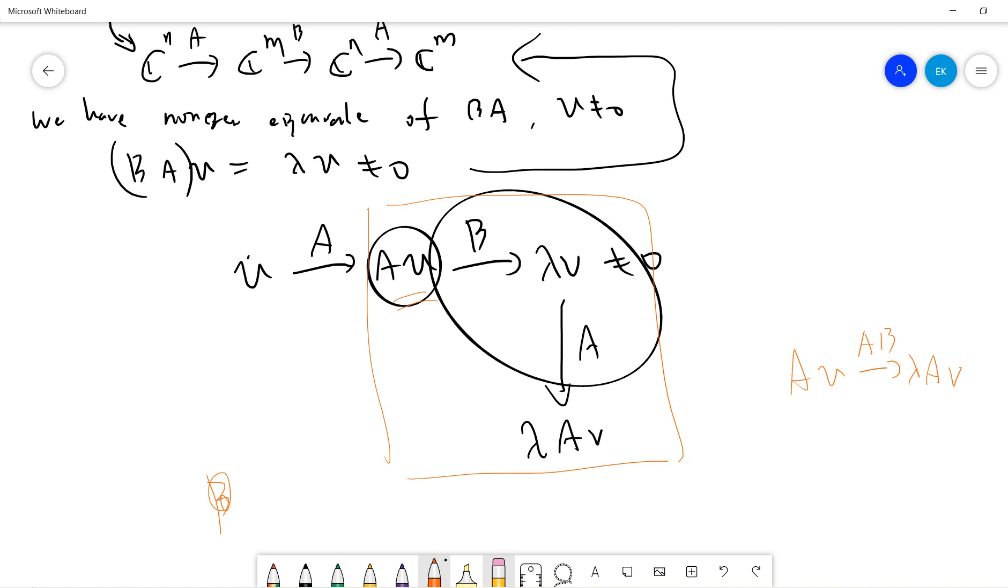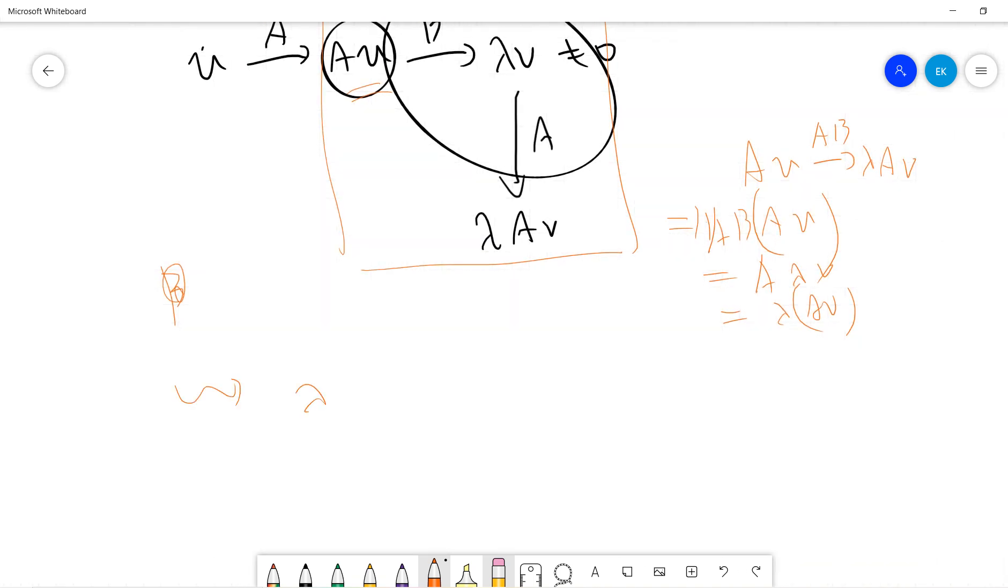So you see, this is BAV equals λ·AV. This is B, A, V equals λ·AV. Which tells you that λ is also eigenvalue of AB with eigenvector AV. Since AV is non-zero, this is indeed eigenvector, so the proof is done.